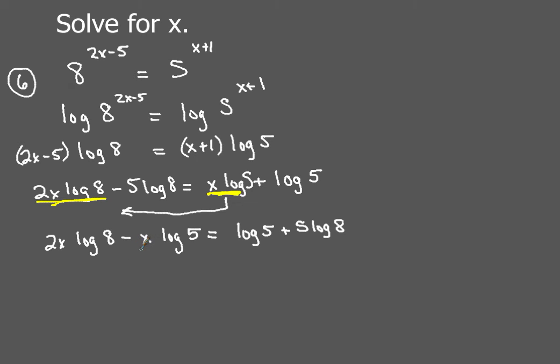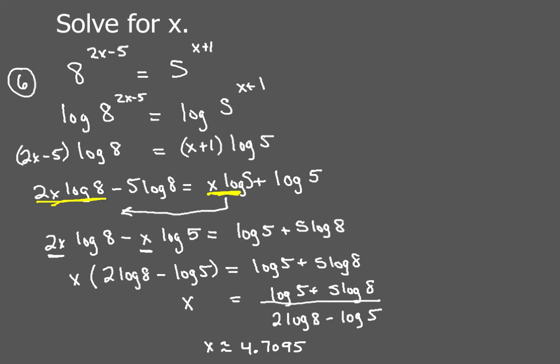Now, next, both terms on the left side have a variable of x, so what you're going to do is factor out the x. So now, once we factor out the x, all we have to do is divide to isolate the variable and get x by itself. So your exact answer is log 5 plus 5 log of 8, all of that over the quantity 2 log of 8 minus log 5. When you plug that into your graphing calculator, your decimal approximation should be about 4.7095. All right, you could have done the same thing using natural log instead, or you could use the common log like we did here. All right, so let me give you one of these to go ahead and try on your own, and let's see how you do with this one.